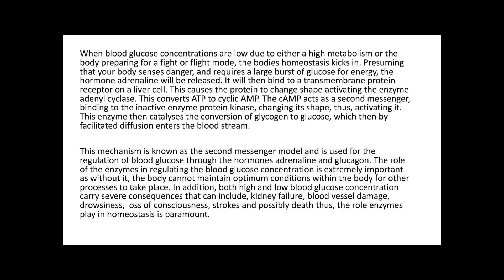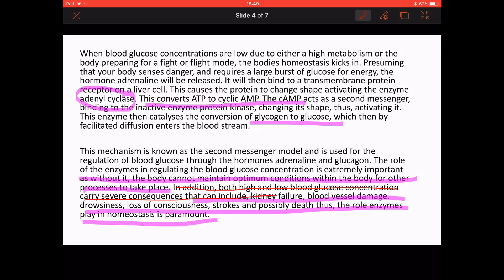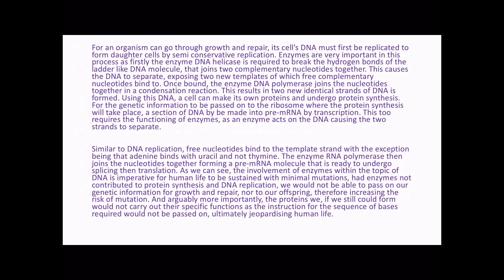The beginning of the third paragraph starts with some irrelevant information. A better entry point would be: 'The hormone adrenaline will bind to the transmembrane protein receptor on a liver cell.' The sentences that follow are clearly A-level standard. However, when we start to talk about importance, we once again drop back to GCSE standard. It would have been much better if the student had actually discussed why a second messenger model is necessary and what the benefits of it are.